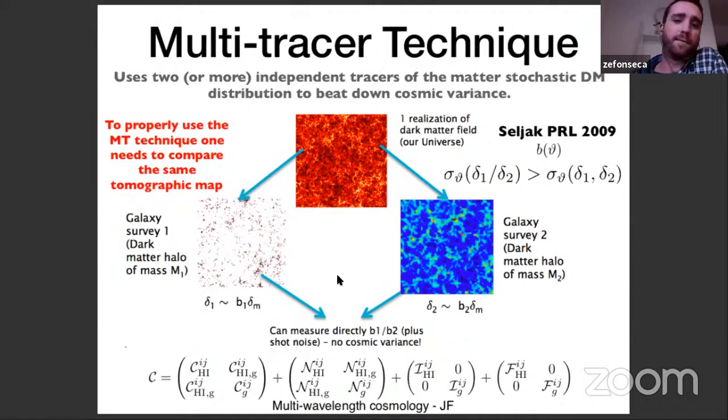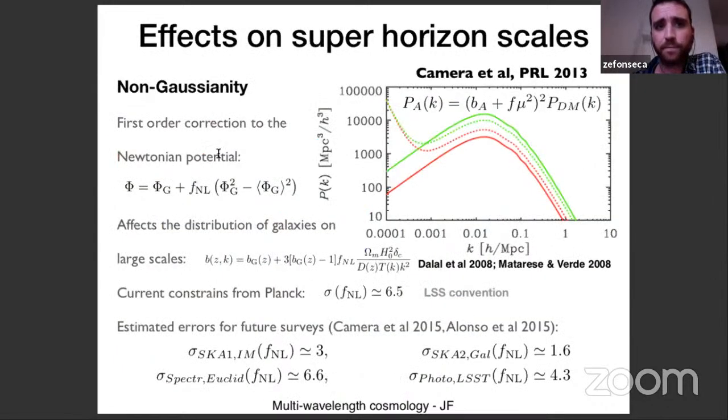And why is this so important? As I'll show later, the bias is affected by local type and other type non-gaussianity. And one of the main reasons that you can't measure, or it's not that you can't, but one of the main reasons why it's hard to measure local type non-gaussianity on the large scale structure is because it suffers from cosmic variance.